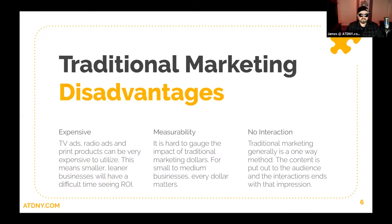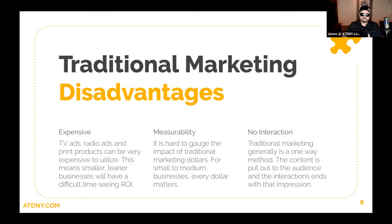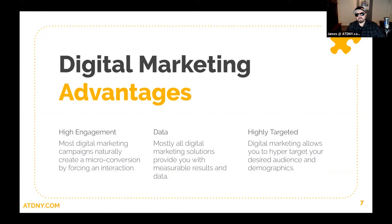Measurability is another disadvantage of traditional marketing. It's tough to gauge the impact of those dollars — just because a magazine goes out to X amount of people doesn't mean X amount of people are actually going to see it. There's also not a lot of interaction; it's somewhat a one-way method where you put the ad out there and they either call or they don't. With digital marketing, on the other hand, it's very high engagement. Most digital marketing campaigns naturally create what I call a micro-conversion because they force an interaction — a click to learn more, a click to download.